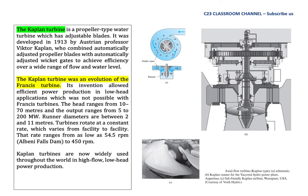Its invention allowed efficient power production in low head applications, which was not possible with the Francis Turbine. The head ranges from 10 to 70 meters and the output ranges from 5 to 200 megawatts. Runner diameters are between 2 and 11 meters. The turbine rotates at a constant rate which varies from facility to facility, ranging from as low as 44.5 rpm to 450 rpm. Kaplan Turbines are now widely used throughout the world in high flow, low head power production.